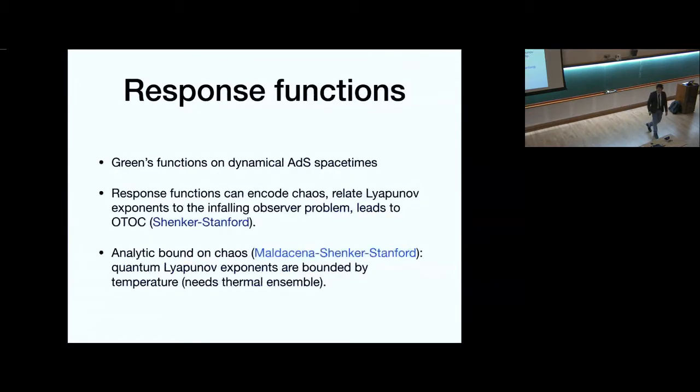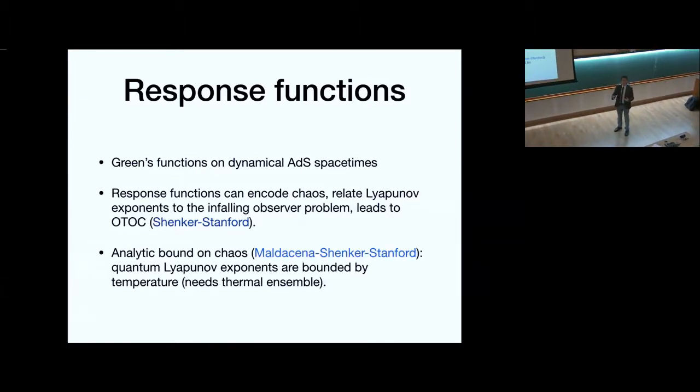And to do response functions, you just put Green's functions on whatever solution you have. But it turns out that these can encode chaos. So Shenker and Stanford told us that if you throw an observer into a black hole, they will see signals of chaos in something that basically has to do with the redshift properties or blueshift of shockwaves. And there was this very interesting analytic bound of chaos by Maldacena and Shenker-Stanford that told us that you take an equilibrium system, the quantum Lyapunov exponents are bounded by the temperature with a few provisos. So the question is, where does this come from?